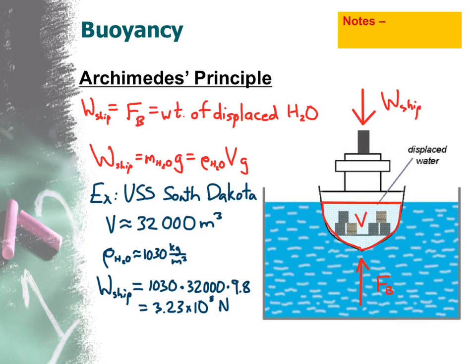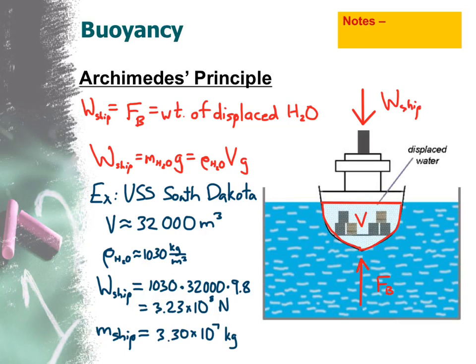If I wanted to figure out the mass of the ship instead, I would just leave off the g, because that's the mass of the H₂O displaced times g. So I could leave that g off to find the mass of the ship, because the mass of the ship is also equal to N times g. I can figure out the mass of the ship simply by taking the density of water times the volume being displaced, which for the USS South Dakota gives a mass of 3.3 times 10 to the 7 kilograms.